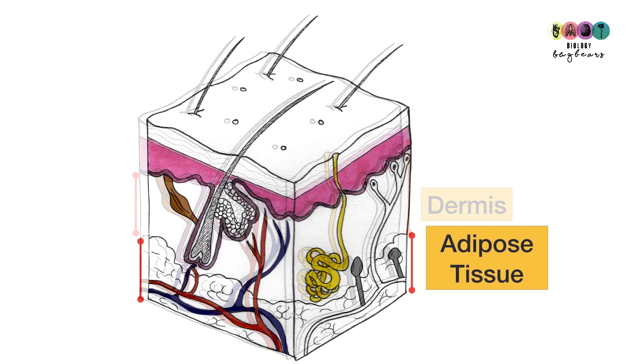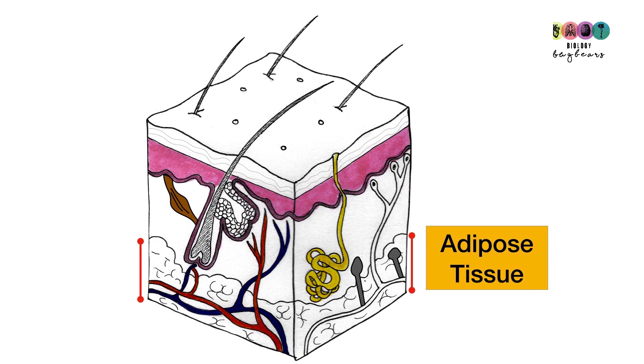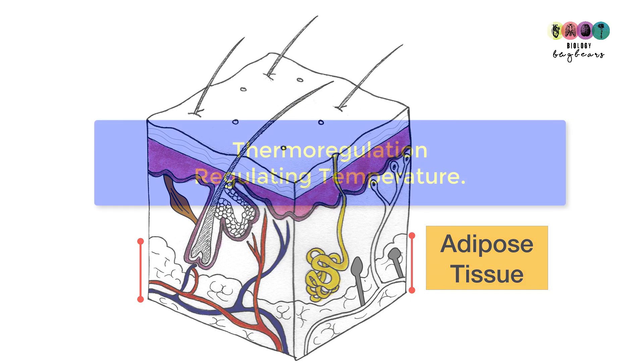Beneath the dermis is a layer consisting of adipose tissue — basically fat. It's important to know this and be able to identify it in a diagram.